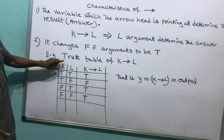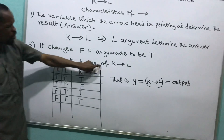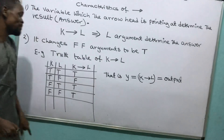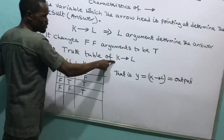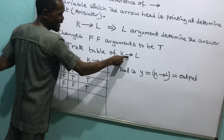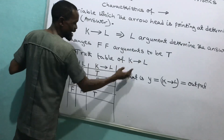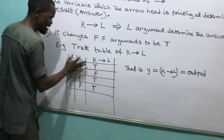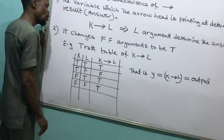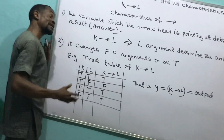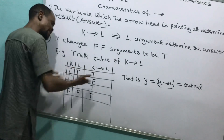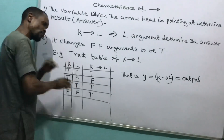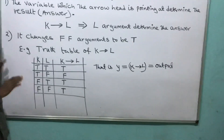Let us look at an example — the truth table of single implication. I have K implies L. How many variables are here? K and L. I will set K and L now. I'm going to show you how to draw this table without wasting time. It's easy.